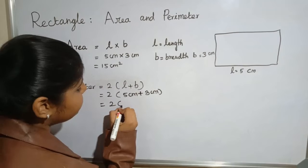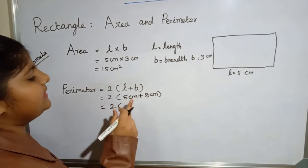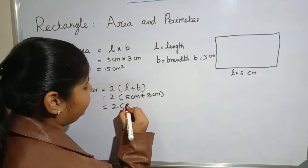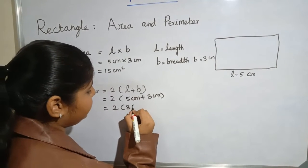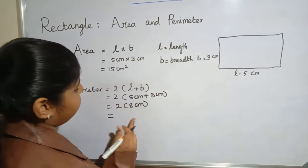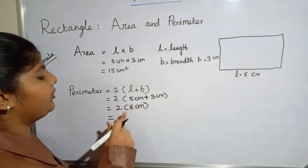5 plus 3 equals 8. Now we have to find the product of 2 and 8: 2 times 8 is 16. 16 centimeters is the answer.